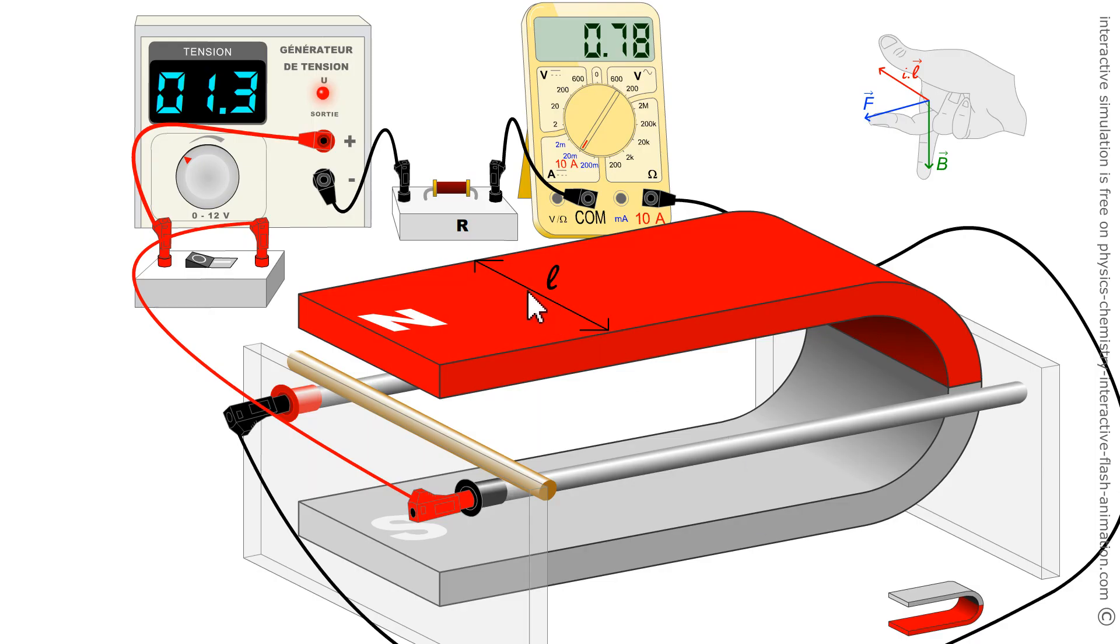L in meters is the length of the part of the movable conductor element that is undergoing—my sentence is not finished. Listen well. That is undergoing the magnetic field. It is not the entire length of the conductive element, but only its part that is subjected to the magnetic field. This is why I drew L here on the magnet and not on the conducting bar.